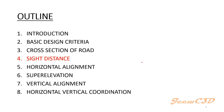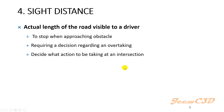What is sight distance? Sight distance is the actual length of the road visible to a driver. If you are driving a vehicle on a road, the length of the road ahead which you can see is called sight distance. This length should be measured along the road — along a straight section if the road is straight, or along the curve if it is a curved portion.